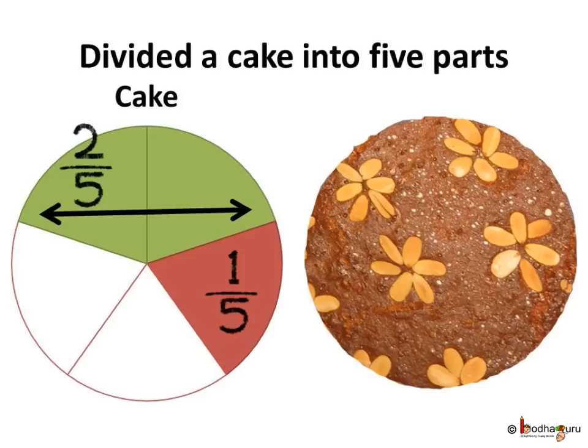So, how do we add fractions? When the denominators are the same, i.e., the fractions are like fractions, we can add the numerators directly and the denominator remains the same.